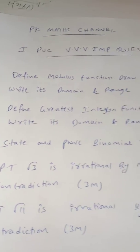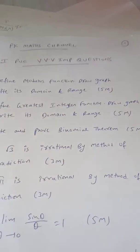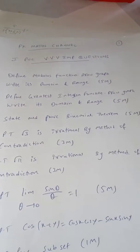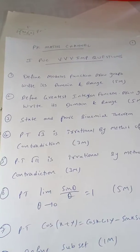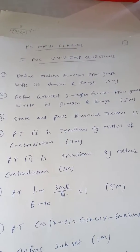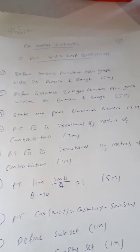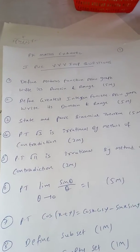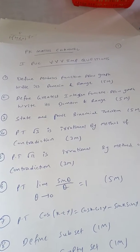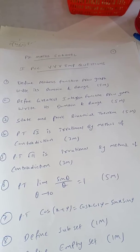The third question is, state and prove binomial theorem. Statement also you write, 5 mark question. Fourth question, prove that root 3 is irrational by method of contradiction. It's a 3 mark question. Fifth one, prove that root 11 is irrational by method of contradiction. It is also a 3 mark question.